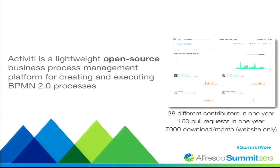We're also open source. We've been on GitHub for about a year now, with about 38 pretty active contributors and about 165 pull requests. That means every two days in the past year we've had a patch coming from somebody external — some are really core changes and new features. From the website, activiti.org, we have on average 7,000 downloads a month, but that's only from the website. By using Maven it's many, many more, though there's no way of tracking that.